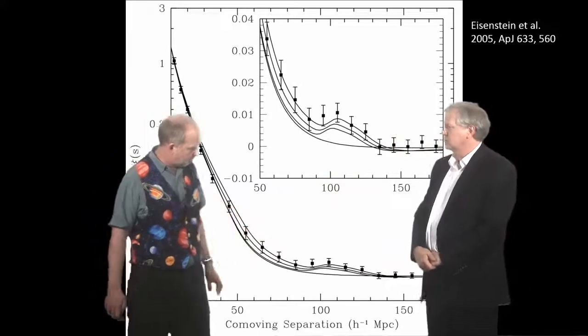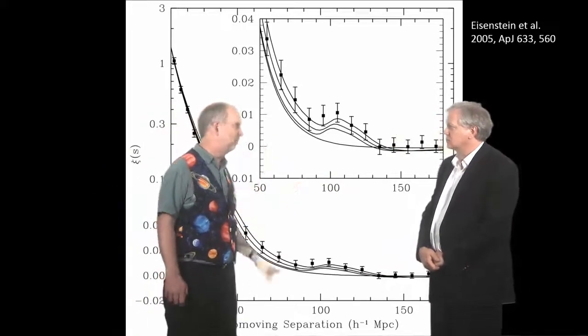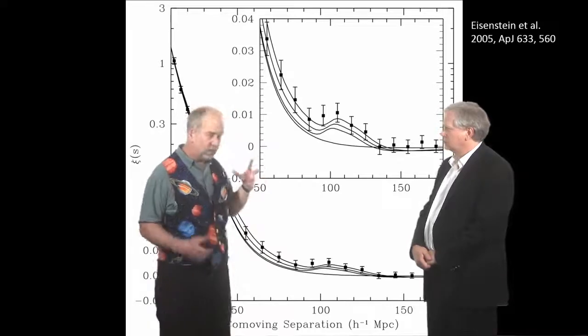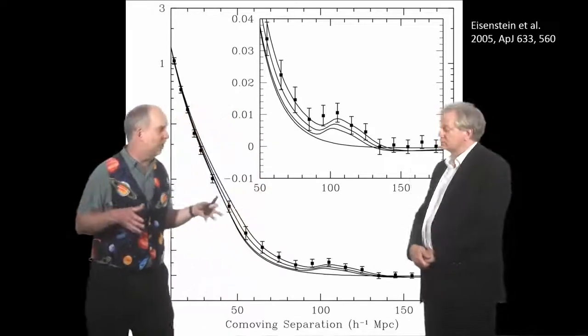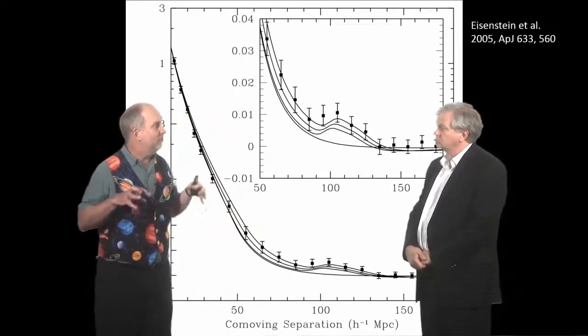So, it's actually for the current value of the Hubble constant corresponds to about 150, 160 megaparsecs. Yeah. And so, it does seem that on those very large scales, the universe is lumpy to this day.